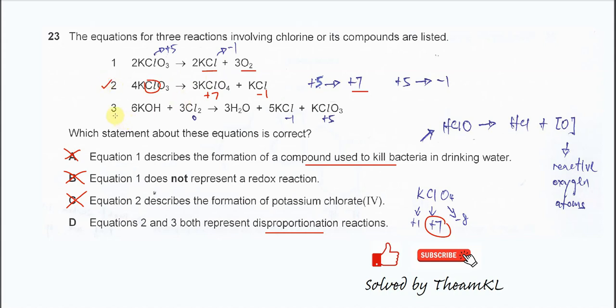For the third equation, the chlorine initially is 0. After reaction, it forms two chlorine products. The chlorine in KCl is negative 1. In KClO3 is positive 5. So we know it's from 0 to negative 1, reduction. From 0 to positive 5, oxidation. Therefore, this one is also a disproportionation reaction.